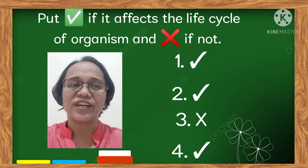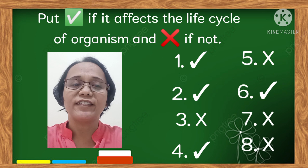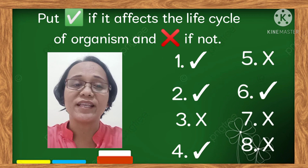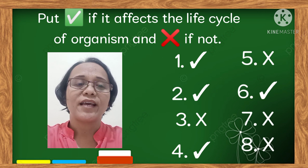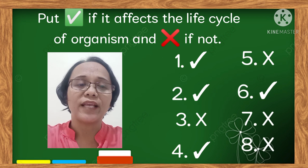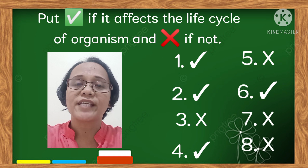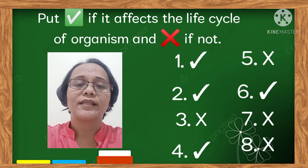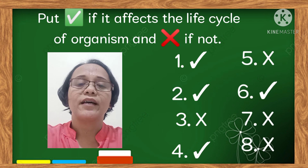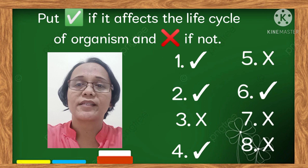Let's now check your answers. Number 1: Load — Check. Environmental calamities — Check. Respiratory system — X. Ultraviolet rays — Check. Time — X. Drought — Check. Water cycle — X. And atmospheric pressure — X.